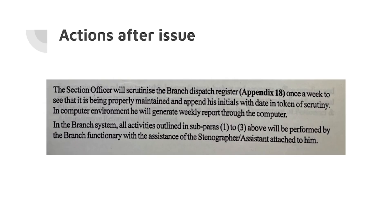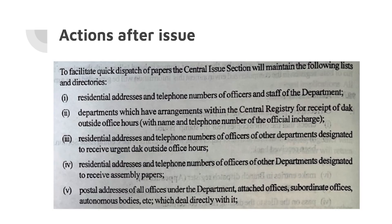The Section Officer will scrutinize the branch dispatch register, as given in Appendix 18 of the manual, once a week to see that it is being properly maintained and append his initials with date in token of scrutiny. In a computer environment, he will generate a weekly report through the computer. In the branch system, all activities outlined in subparas 1 to 3 above will be performed by the branch functionary with the assistance of the stenographer or assistant attached to him.